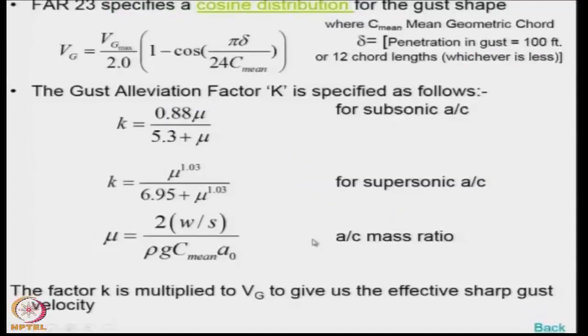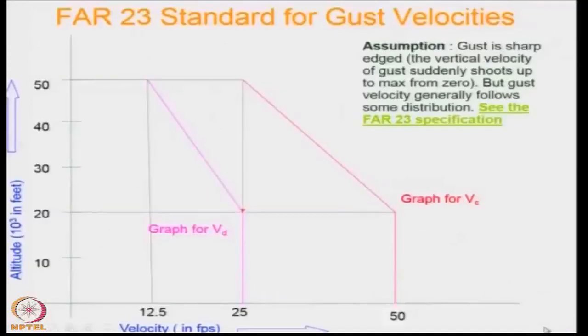There is something called as a gust elevation factor. That gust elevation factor k takes care of the fact that the gusts are usually not sharp and they will be increasing slowly from 0 value to the maximum value. This factor k is multiplied by the gust velocity to achieve the effective sharp gust velocity. And there is a separate formula for subsonic flight and a different formula for supersonic flight.